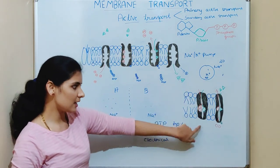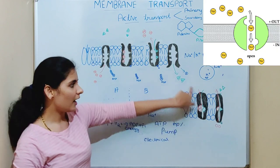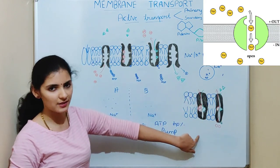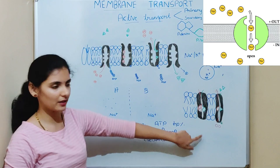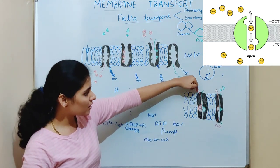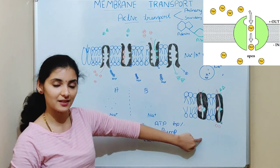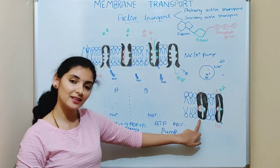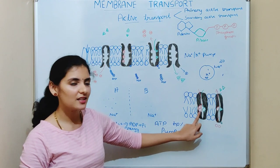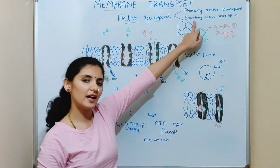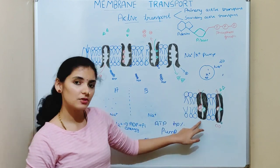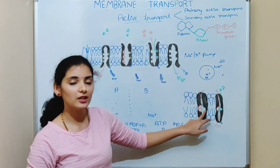Imagine this sodium channel, where sodium ions are more concentrated outside the cell than inside. Due to this sodium channel, sodium ions move along the concentration gradient, and energy is released. This energy is used by secondary active transport for the movement of another molecule — in this example, glucose.